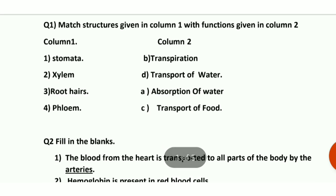Question number 1: match structures given in column 1 with functions given in column 2. First one is stomata — its answer is option B, transpiration, because stomata helps in the process of transpiration. Next, second is xylem — xylem is a vascular bundle which helps in the transport of water. Root hairs — their function is absorption of water from the soil. Fourth one is phloem — phloem is responsible for the transport of food in plants.